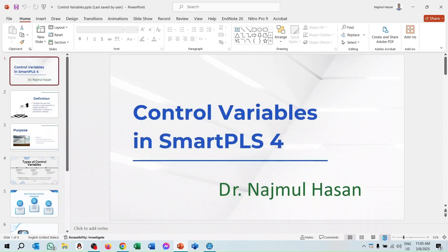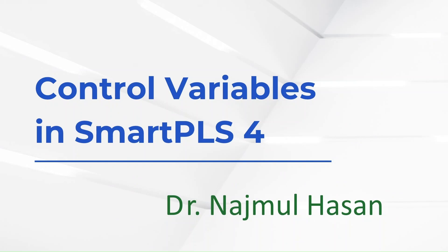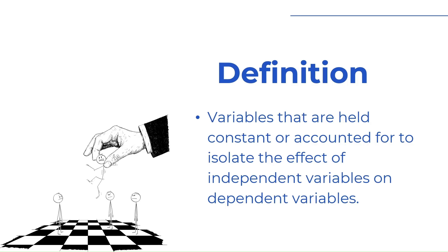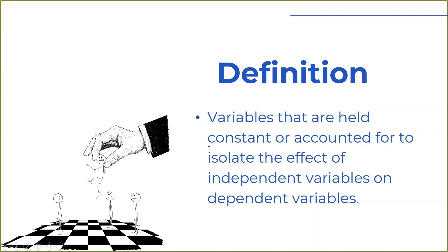As-salamu alaykum. In this lecture series I am going to show you how to use control variables in SmartPLS 4. First of all, we need to know what is a control variable. The definition of a control variable is: variables that are held constant or accounted for to isolate the effect of independent variables on the dependent variable.